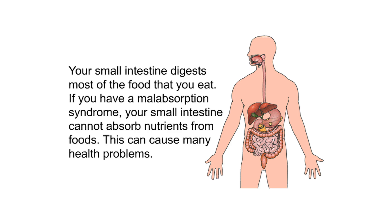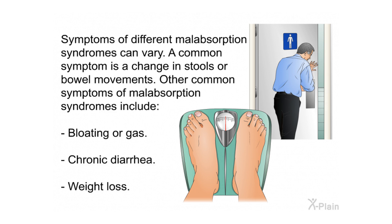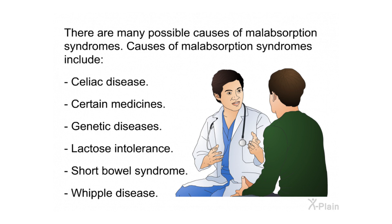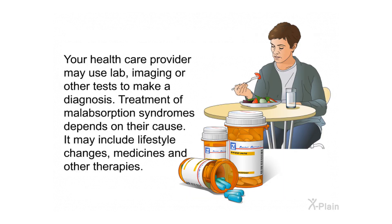Summary: Your small intestine digests most of the food that you eat. If you have a malabsorption syndrome, your small intestine cannot absorb nutrients from foods, which can cause many health problems. Symptoms can vary but commonly include changes in bowel movements, bloating or gas, chronic diarrhea, and weight loss. Causes include celiac disease, certain medicines, genetic diseases, lactose intolerance, short bowel syndrome, and Whipple disease. Your health care provider may use lab, imaging, or other tests to make a diagnosis. Treatment depends on the cause and may include lifestyle changes, medicines, and other therapies.